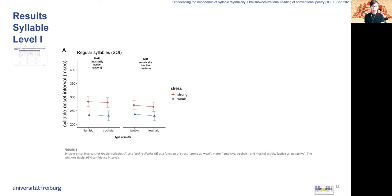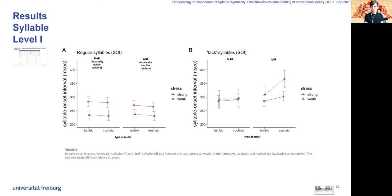For the syllable onset interval, for the regular syllables, we found that the strong syllables were spoken longer than the weak syllables, as expected. That's the red line over the blue line. This effect was more pronounced for musically active readers and also in iambic poems.